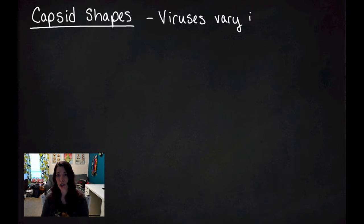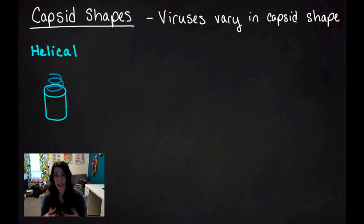Capsid shapes determine virus shape. Viruses vary in shape because of the container that they're contained in. We can have helical like the one that I just showed you. Tobacco mosaic virus is an example of a helical virus.